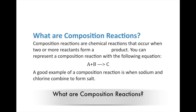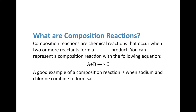The first type are composition reactions. Composition reactions are chemical reactions that occur when two or more reactants form a single product. We can represent a composition reaction with the equation A plus B yields C. So we have two or more substances, A and B, and they come together and combine to create substance C.